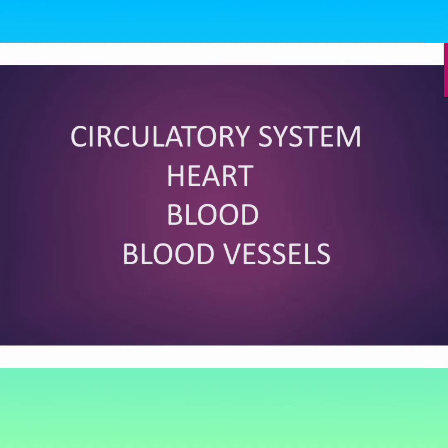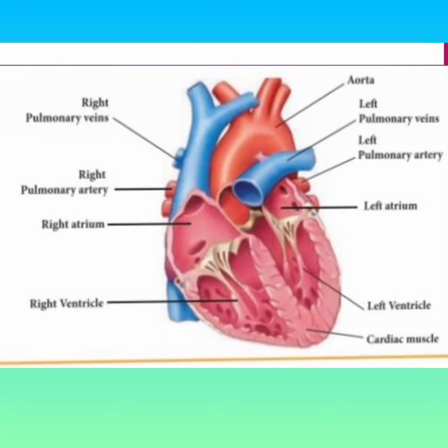The circulatory system has three parts: heart, blood, and blood vessels. First we will learn about the heart. The heart is a hollow muscular organ. It is somewhat conical in shape. It is covered with a double wall membrane called the pericardium. The space between the membrane is filled with the pericardial fluid.